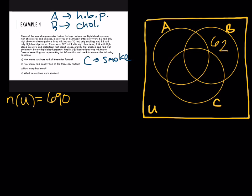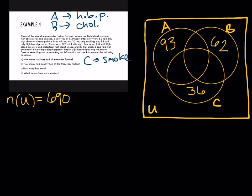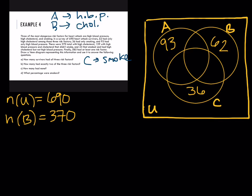36 had only smoking, so we know that region. And 93 had only high blood pressure. Now, 370 total had high cholesterol — that's the cardinality of set B. The problem doesn't specify whether those people also had the other two risk factors, so we just know 370 people are in set B. But there are three unknown regions in set B, so we can't distribute those people yet. We'll just record that and move on.